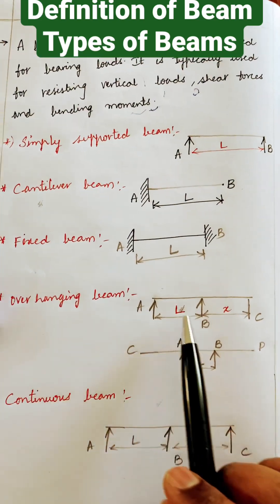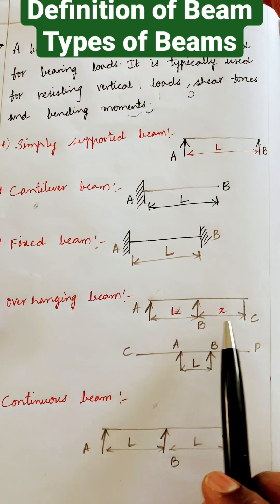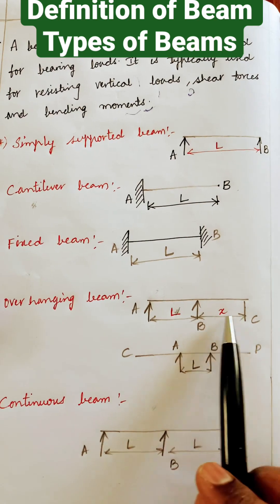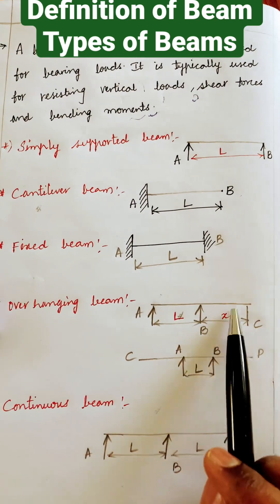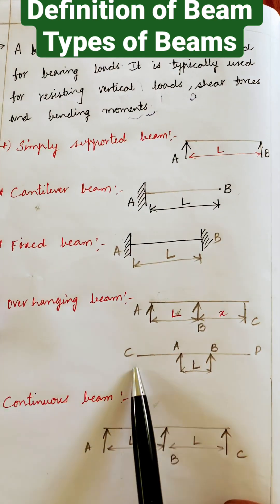Overhanging beam. Overhanging beam is that the end portion of the beam extends beyond the support. Beyond the support this is being extending if you look even this side also.